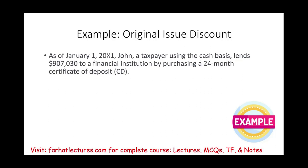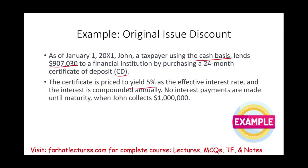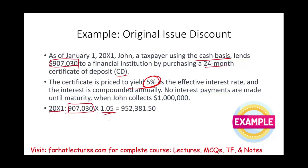Let's assume on January 1st, X1, John, a taxpayer using cash basis, lends $907,030 to a financial institution by purchasing a CD. The certificate is priced to yield 5% as the effective interest rate. John will earn 5% every year for two years, 24 months. No interest payments are made until maturity when John collects a million dollars. So in year one, the money grows at 1.05. Taking $907,030 times 5%, John earned $45,351.50 in the first year.